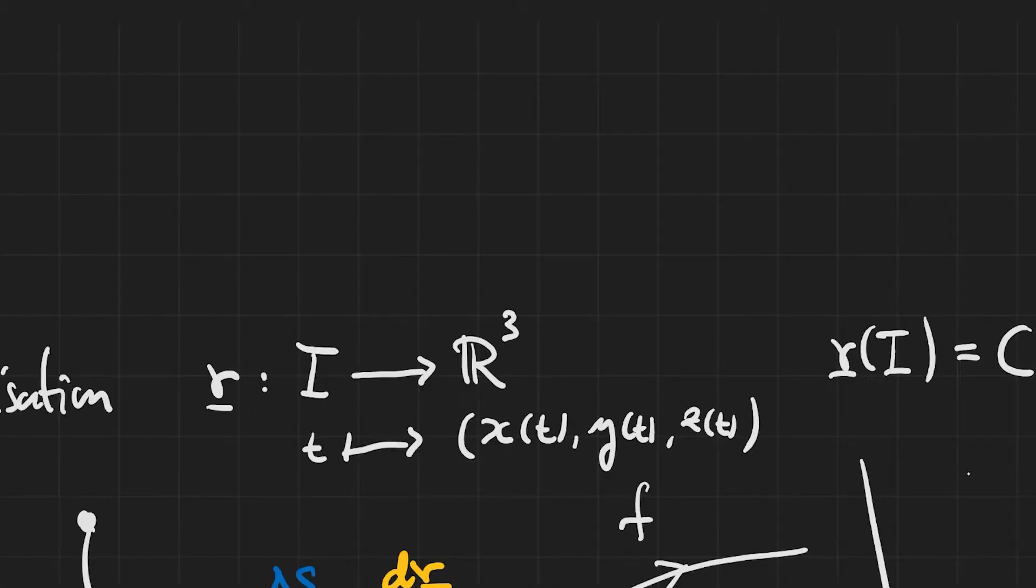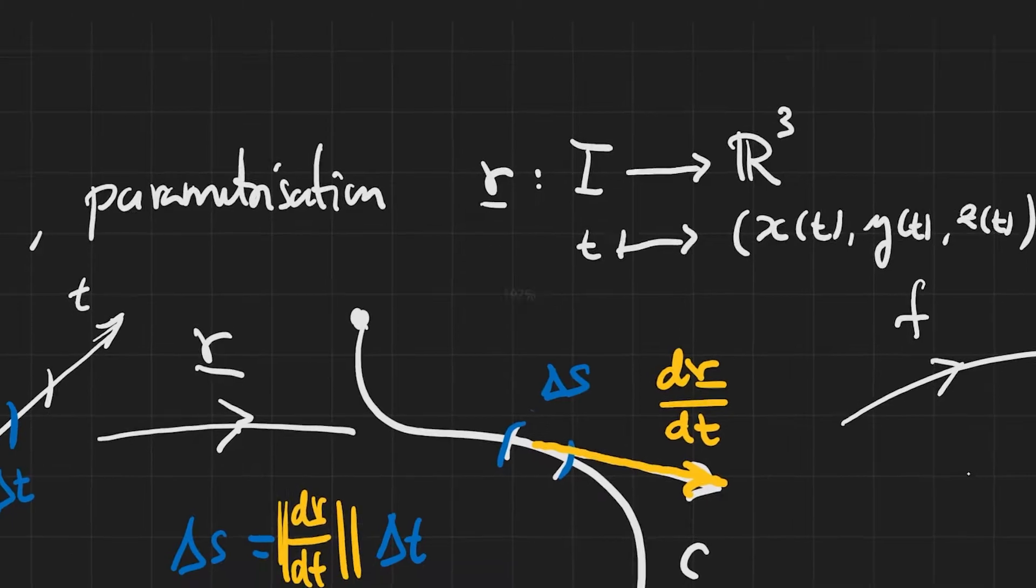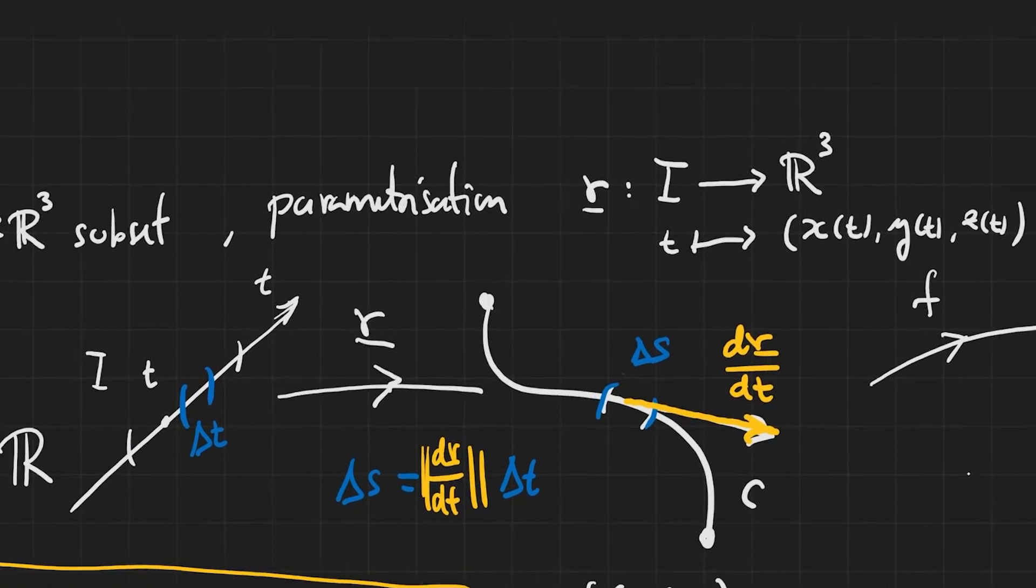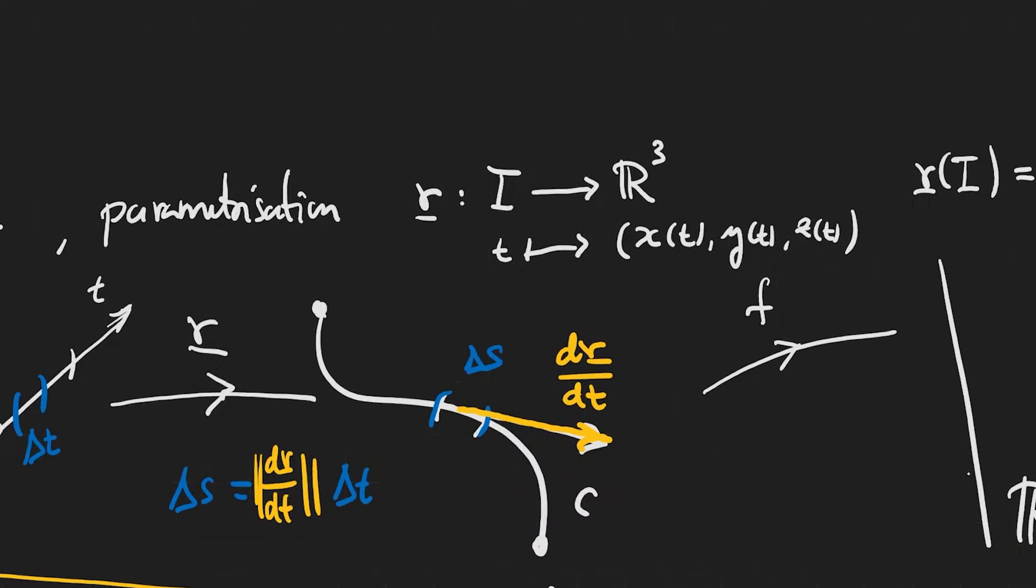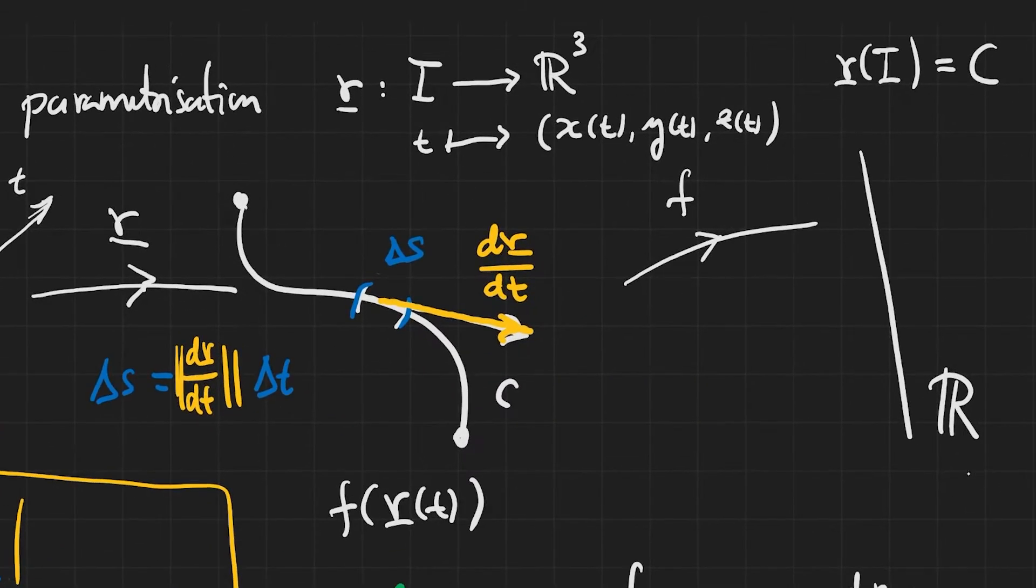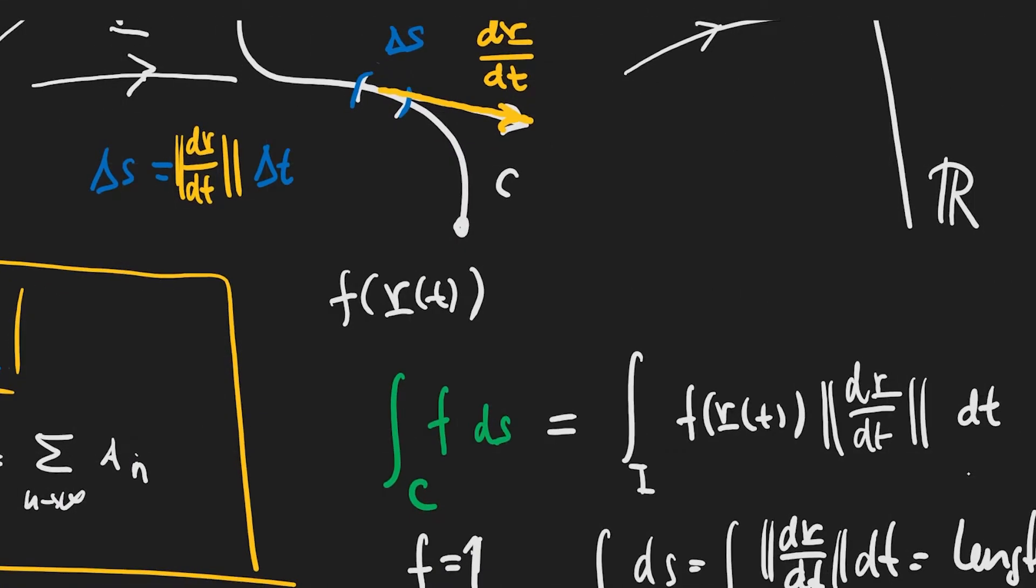So the situation that we have can be depicted as follows. So you can see here on the left the parameter axis, and on the right you can see three-dimensional space where R, our parameterization map, is sending our parameters. And of course we're going to consider some function that is defined in the bulk of all the space. So the problem is, how do we define this green integral? The integral of f over the curve.